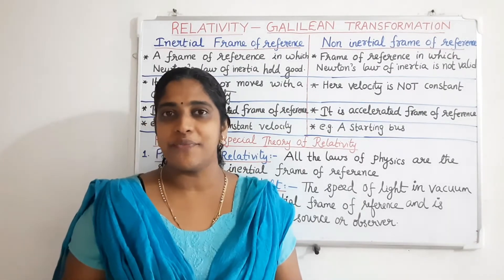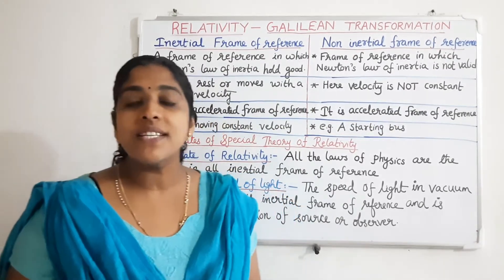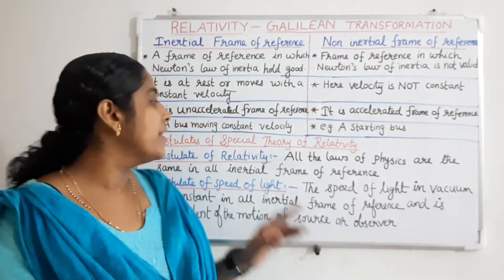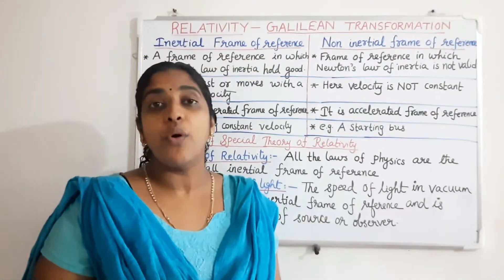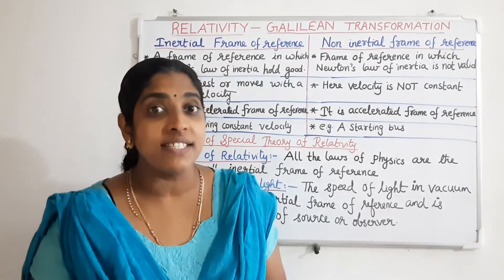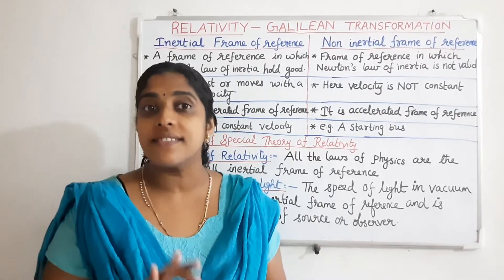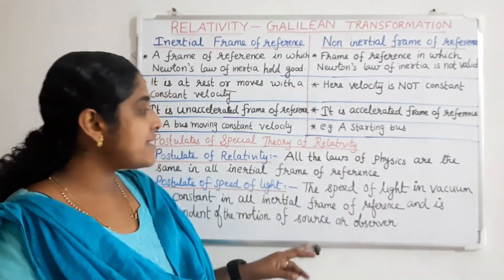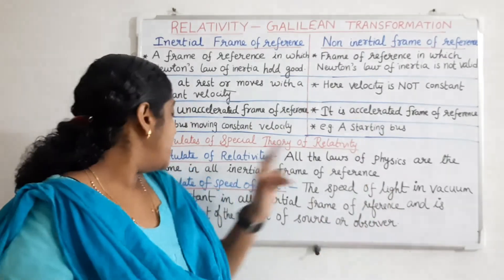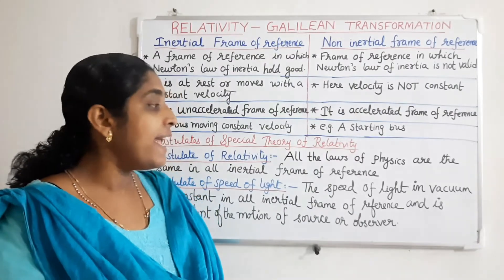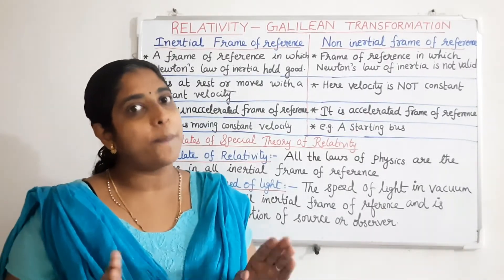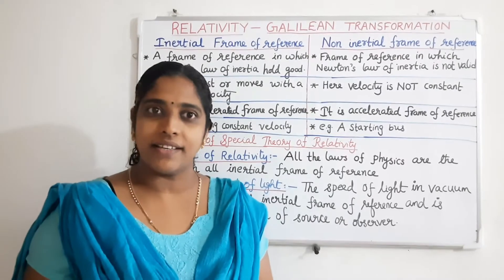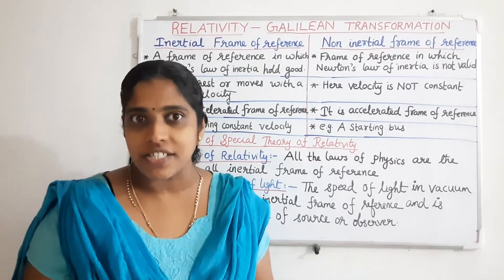Now we can see the postulates of the special theory of relativity. There are two postulates. The first one is the postulate of relativity: all the laws of physics are the same in all inertial frames of reference — whatever laws we consider will not vary; they have the same form. The second one is the postulate of the speed of light, which states that the speed of light in vacuum is constant in all inertial frames of reference, irrespective of the motion of the source or observer. The speed of light in vacuum is C, equal to 3 × 10⁸ meters per second.